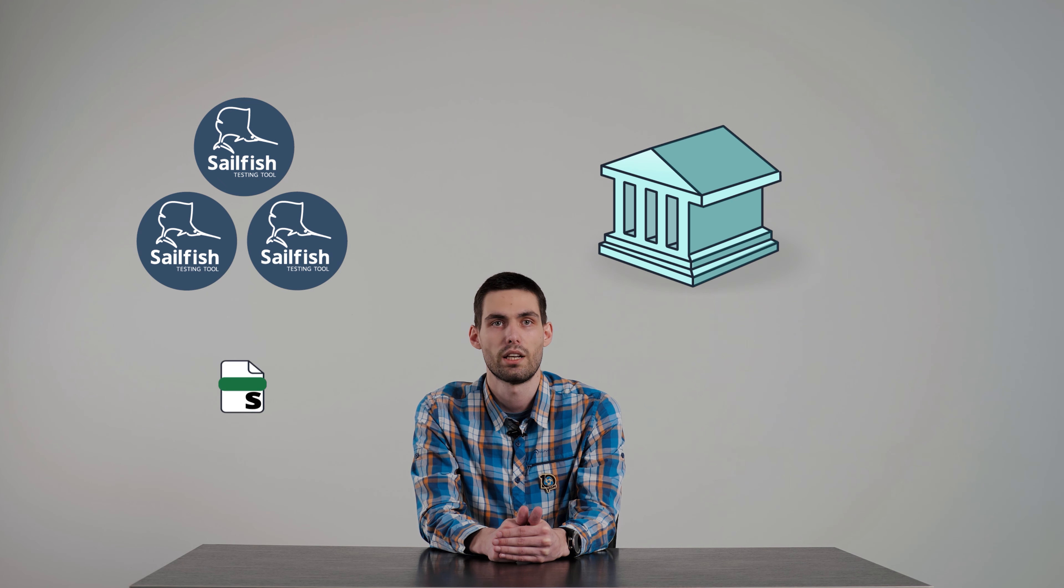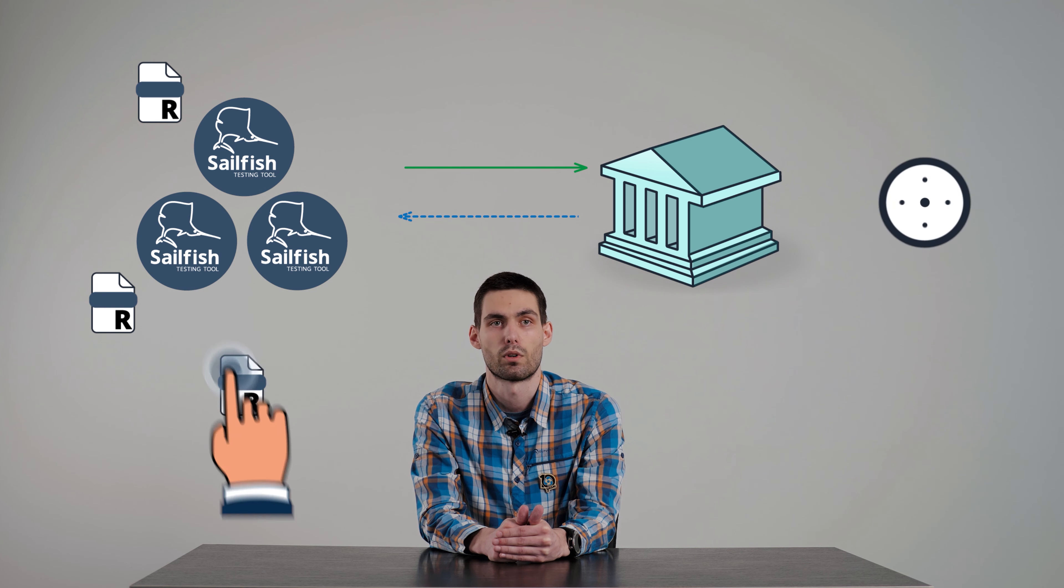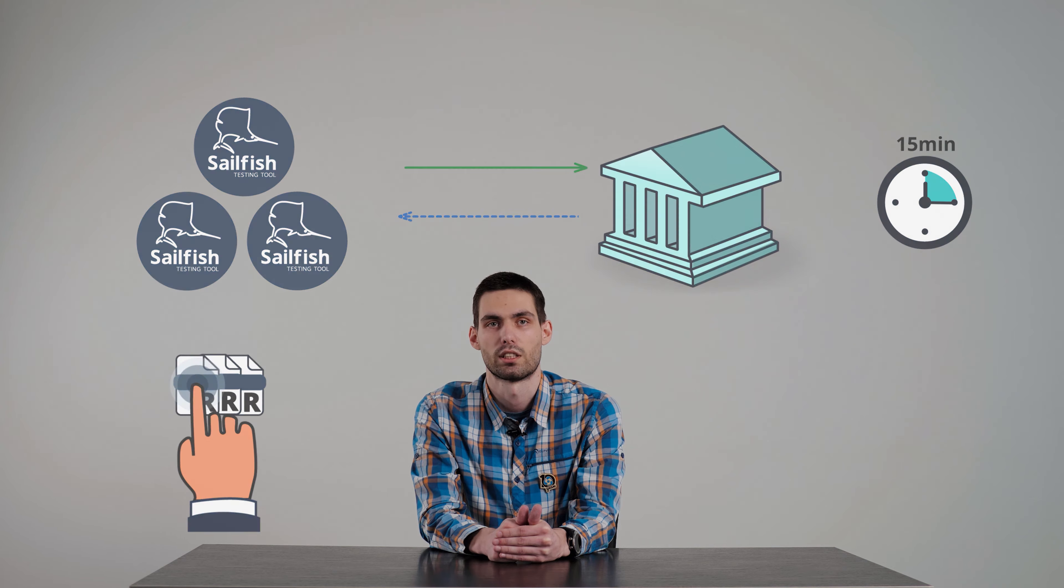The second option is to divide the scripts into groups that can be executed in parallel and execute them on a number of Sailfish instances. This option will save some time, but you'll have to do some manual work. You'll need to break down the scripts into groups, upload them to the right instances, and once done, collect the reports from all instances in one place for further analysis.